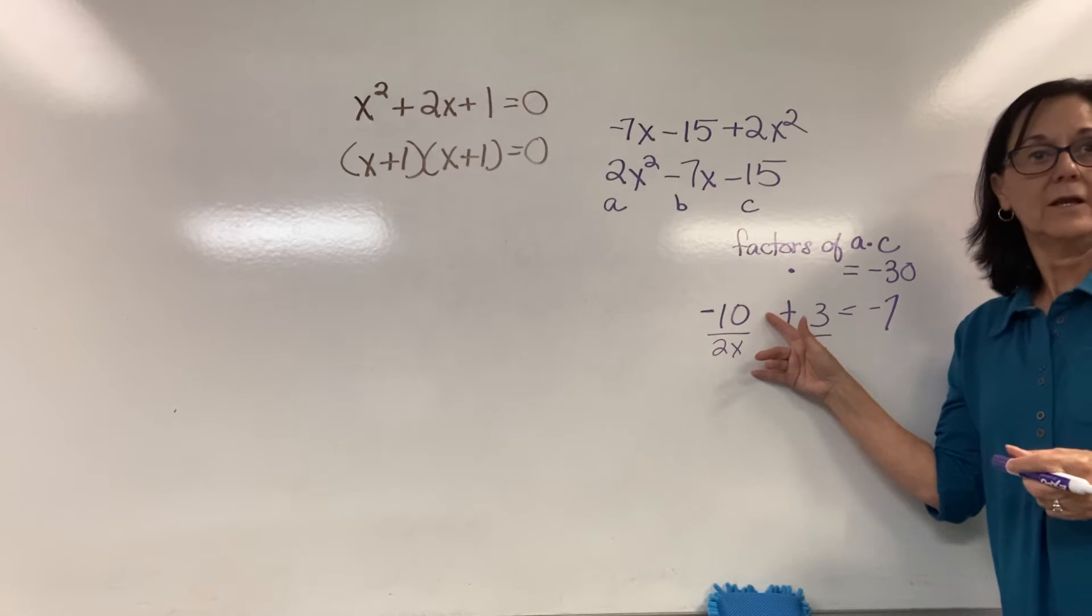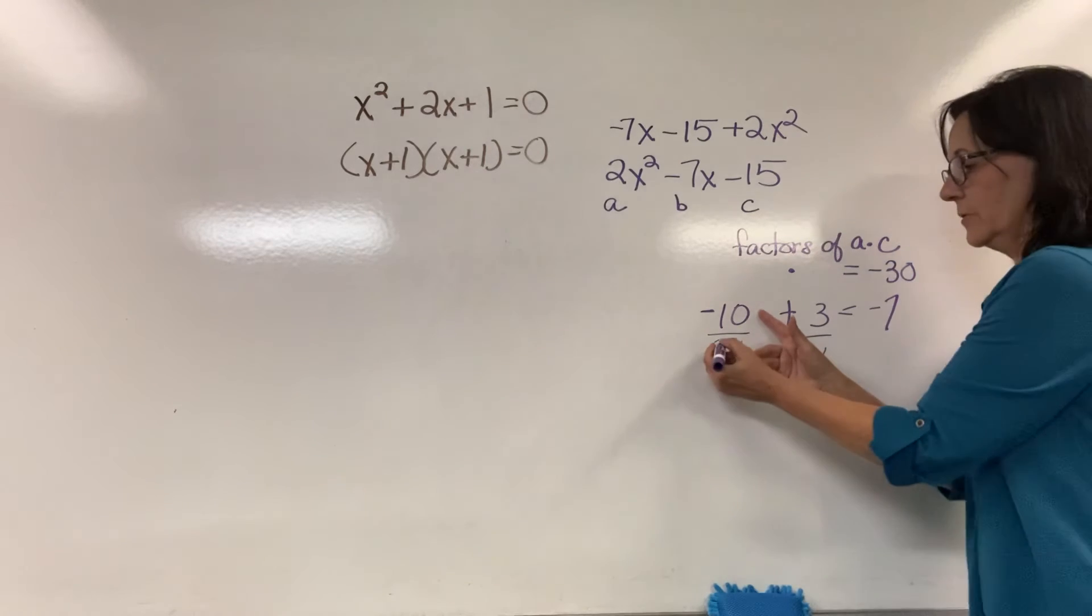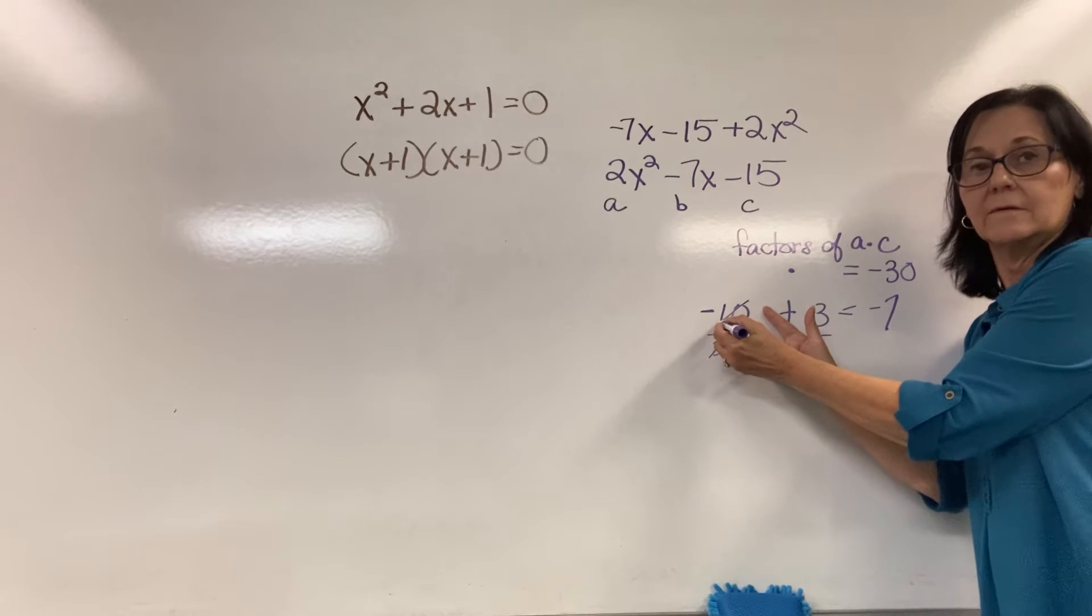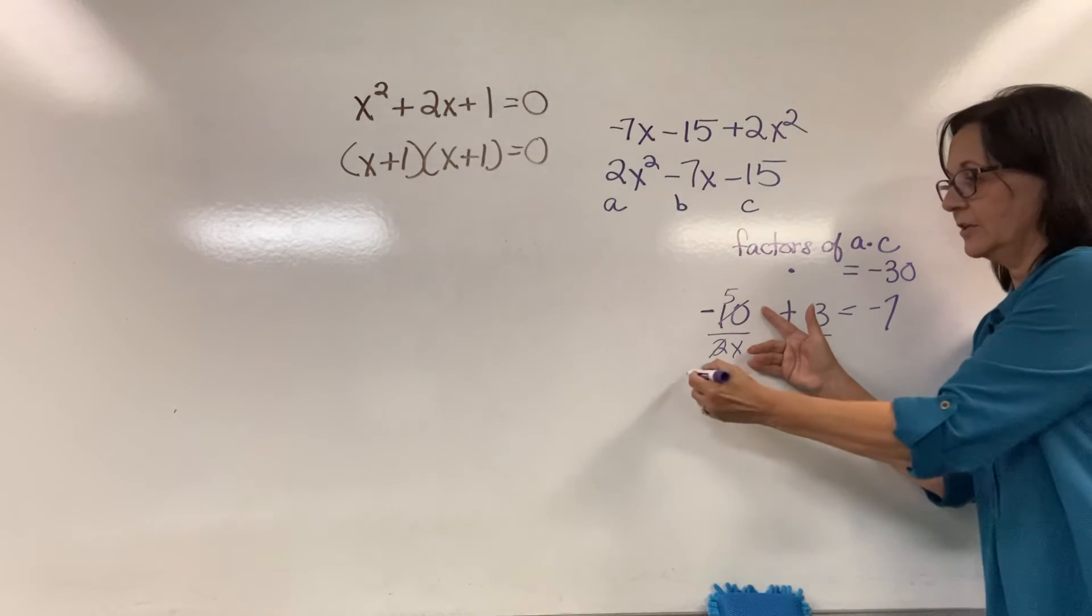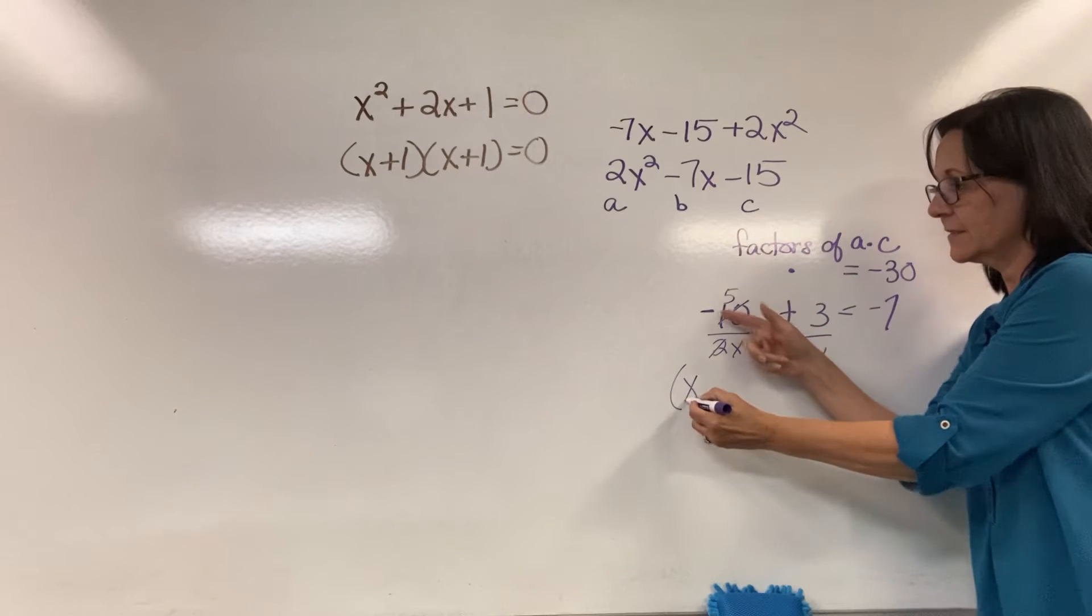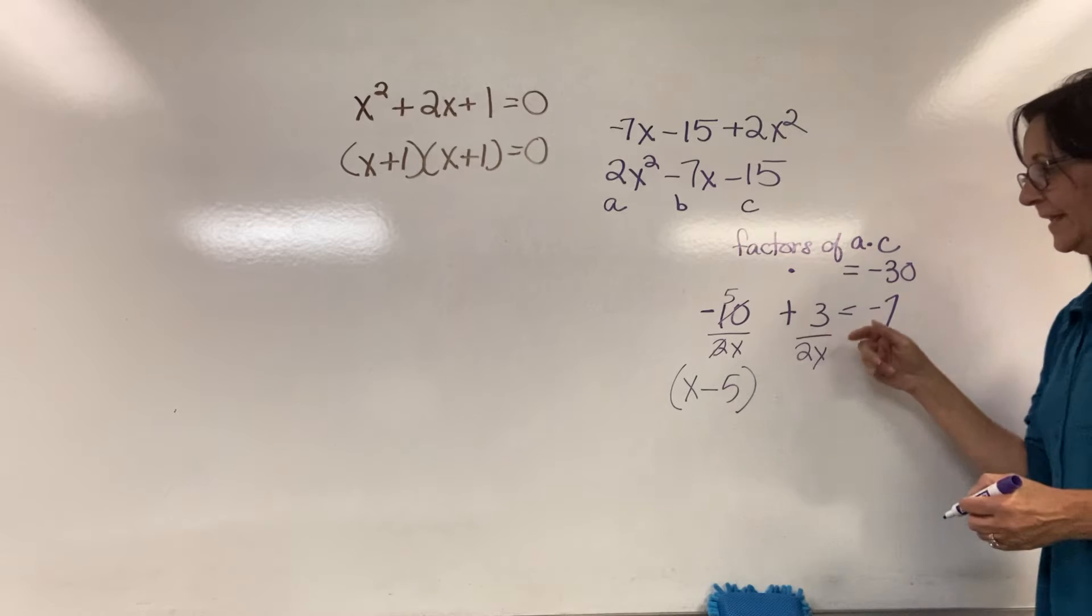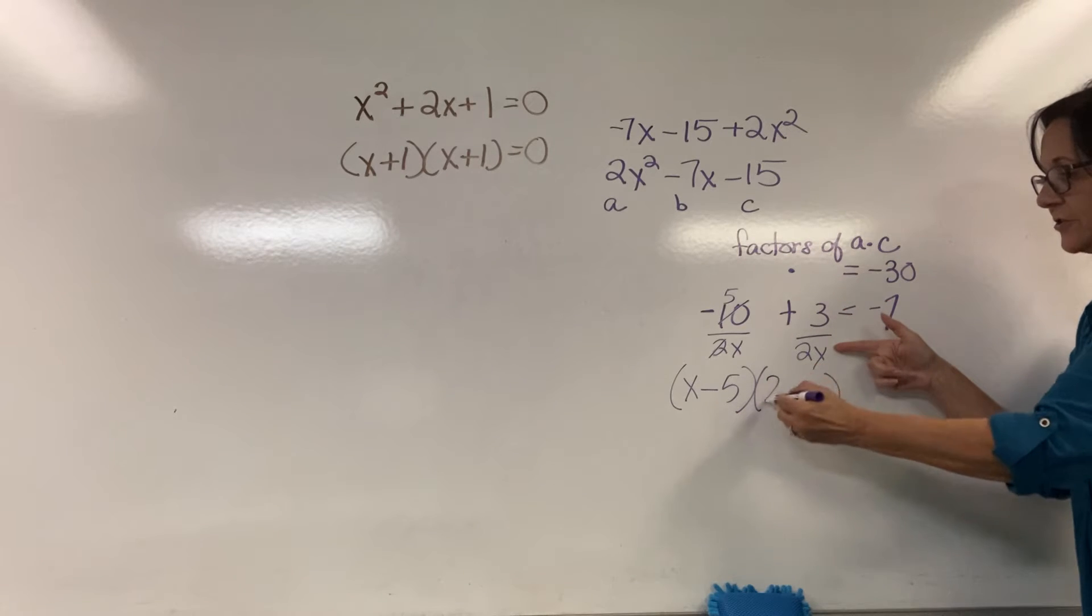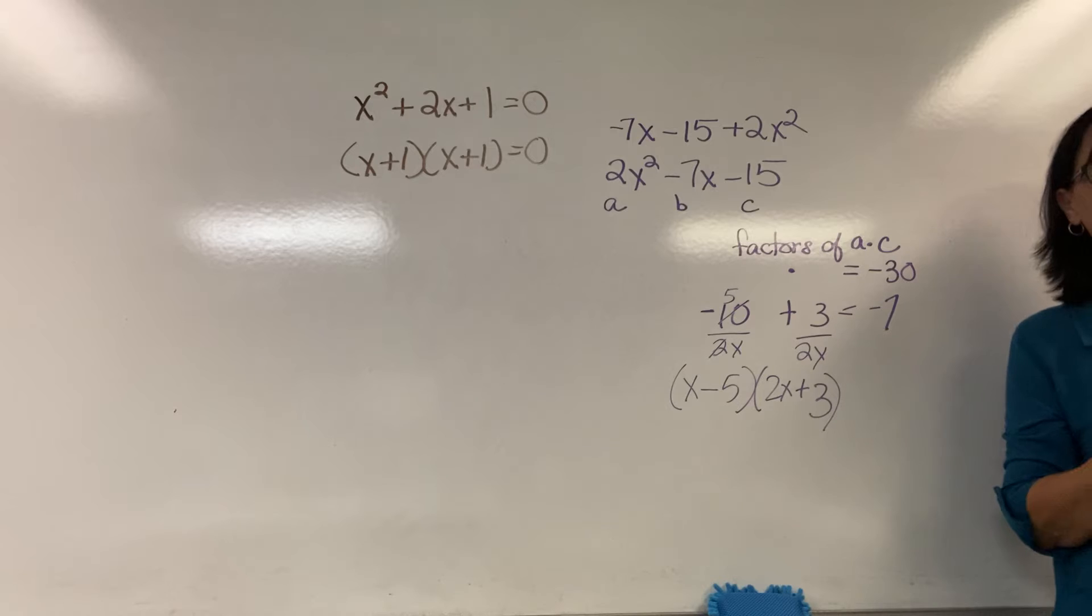We're going to simplify. We're going to simplify the 2 and the 10. What goes into both 2 and 10? 2. So that becomes 1. And this becomes negative 5. Look at my factor. I read bottom over top: x minus 5. Can I simplify the 2 and the 3? No. So it's 2x plus 3. Is that the answer? That's the answer. This is magic.